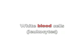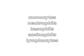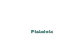The next component of blood is white blood cells, or leukocytes. Their main function is to help fight infection. There are five subcategories: monocytes, neutrophils, basophils, eosinophils, and lymphocytes.